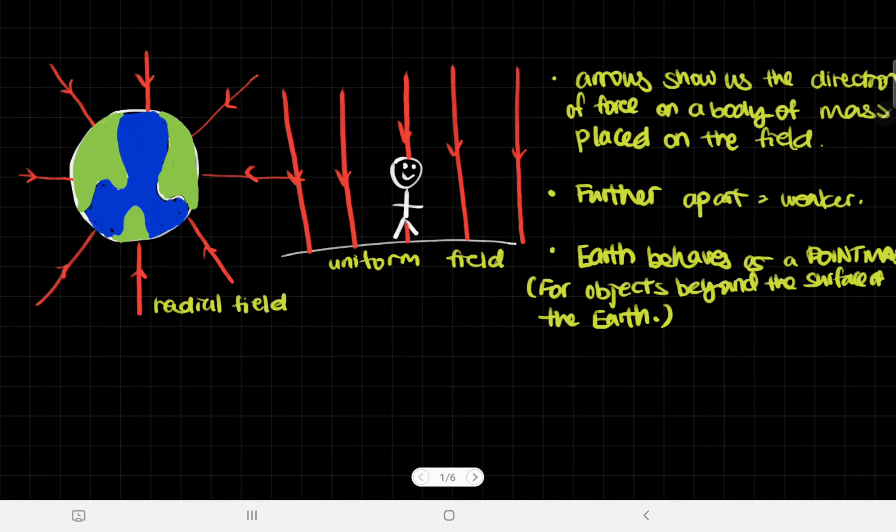If you go to the 27th floor of your condominium, you're not going to weigh any less than you are going to weigh on the ground floor because the distance is just so small in comparison to this gigantic radial field. So assume that when you were on the surface of the Earth, we have a uniform gravitational field.